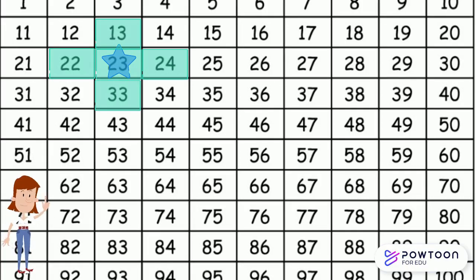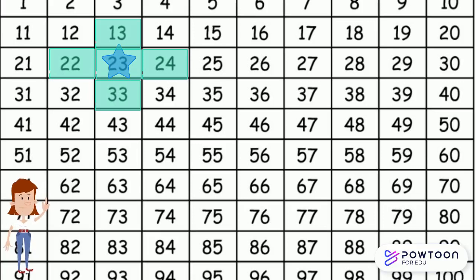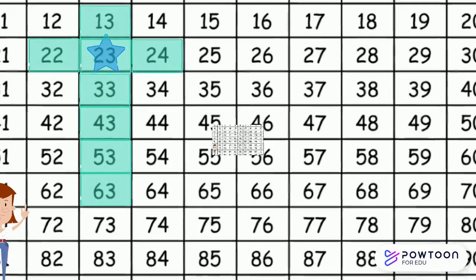But what if I wanted to add more than 10? What if I wanted to add 20 or 30? Well, I just keep skip counting by 10s as I go down the chart: 33, 43, 53, and so on.